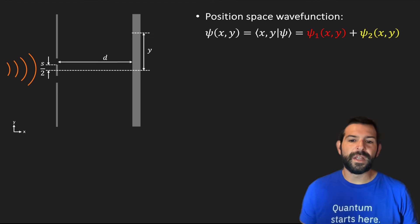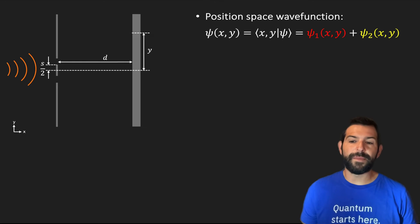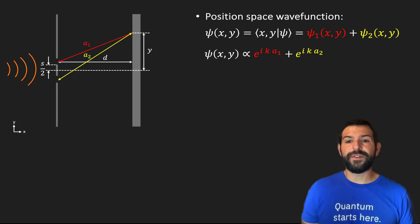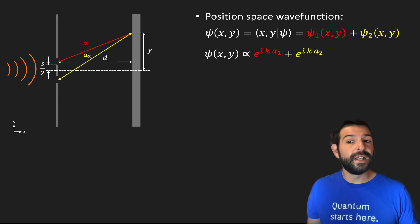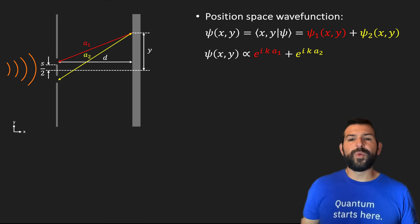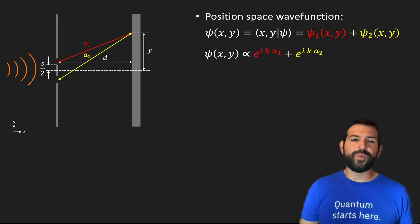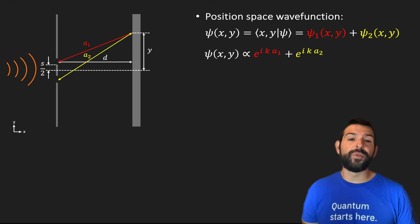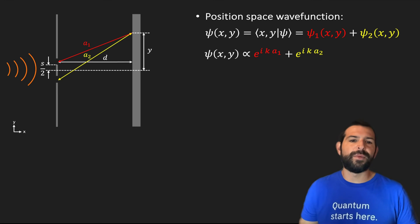To simplify this problem, we will assume that we are dealing with a plane wave rather than a Gaussian wave packet. Here a1 and a2 are the distances from the top and bottom slits respectively to some arbitrary xy coordinate on this plane. It is also worth noting that this wave function is proportional to this summation and not necessarily equal, because this on its own is not normalizable — but we can assume it is pre-multiplied by some function that guarantees the probabilities sum to 1.